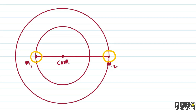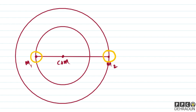This is our M1 and its center is here; on this radius is R1. This is our M2 and its center is here; on this radius is R2.